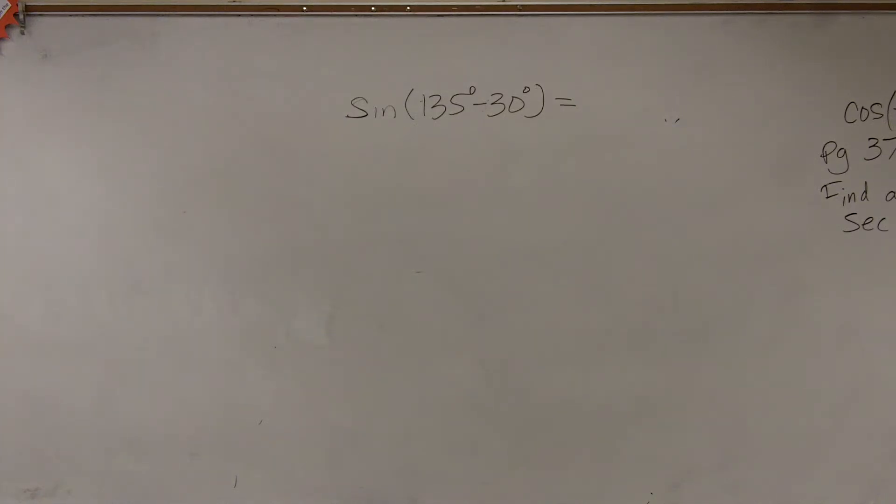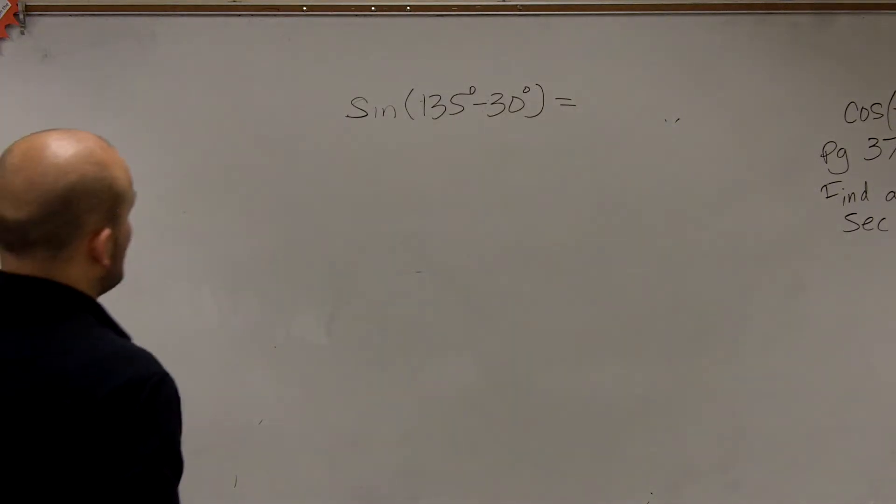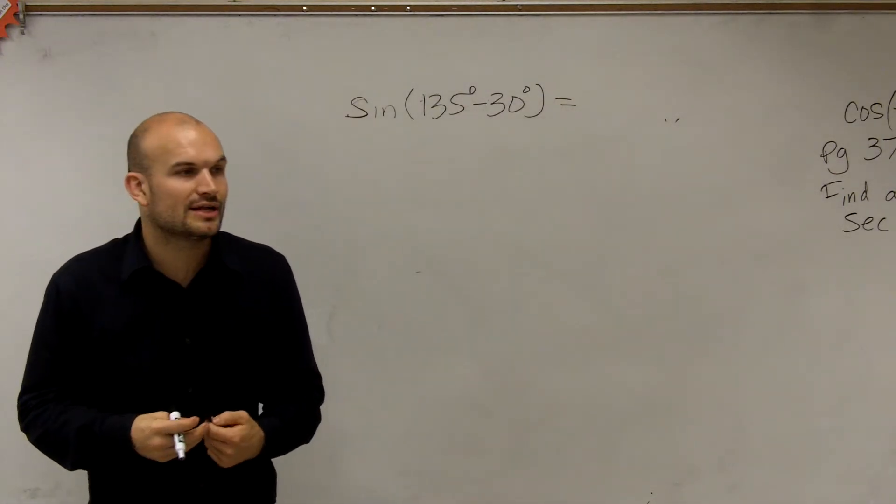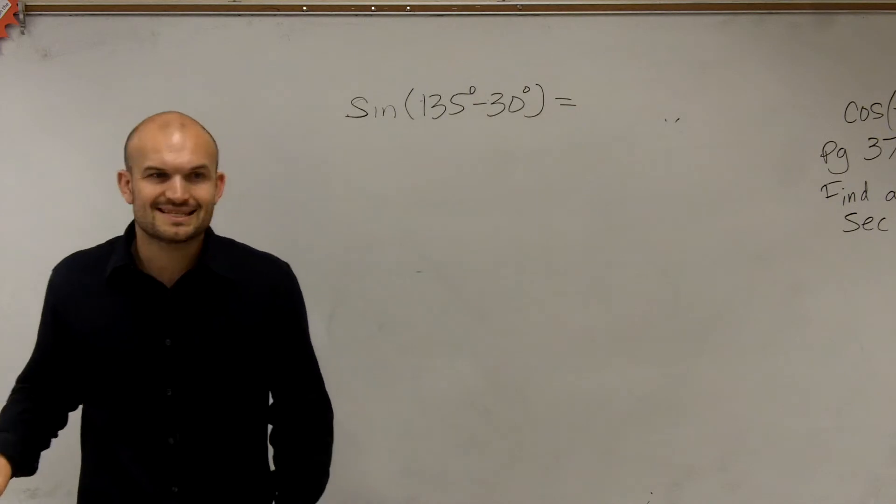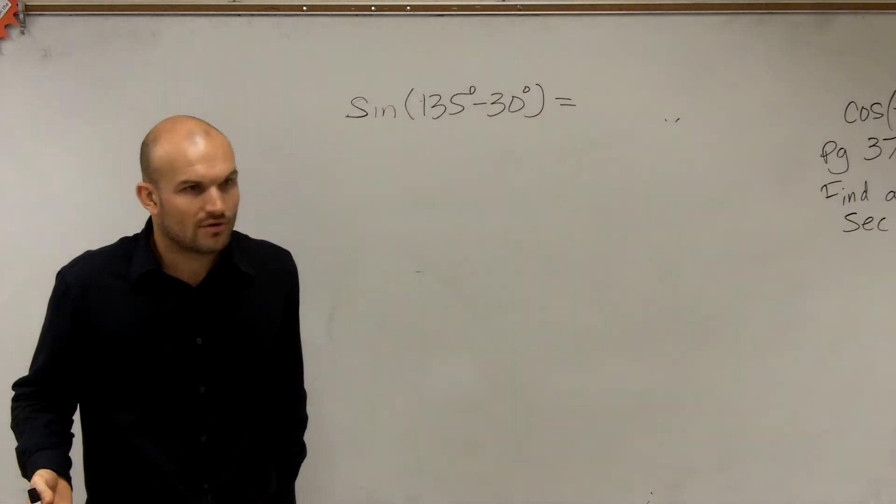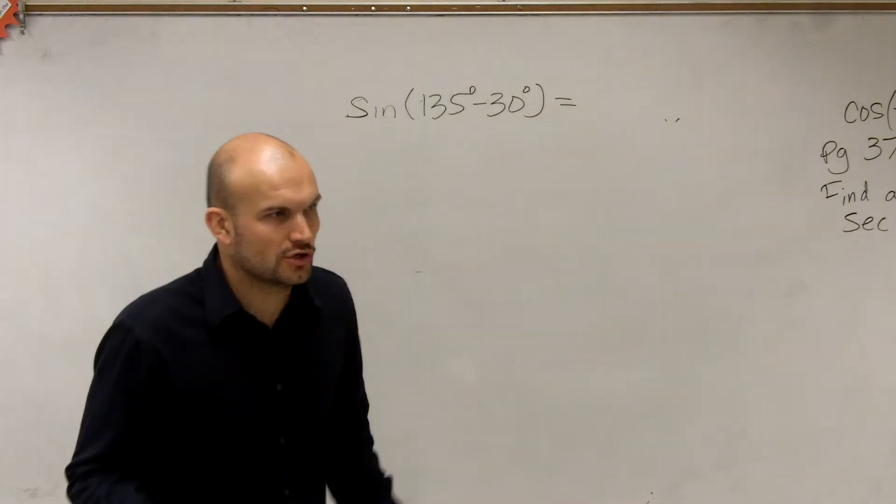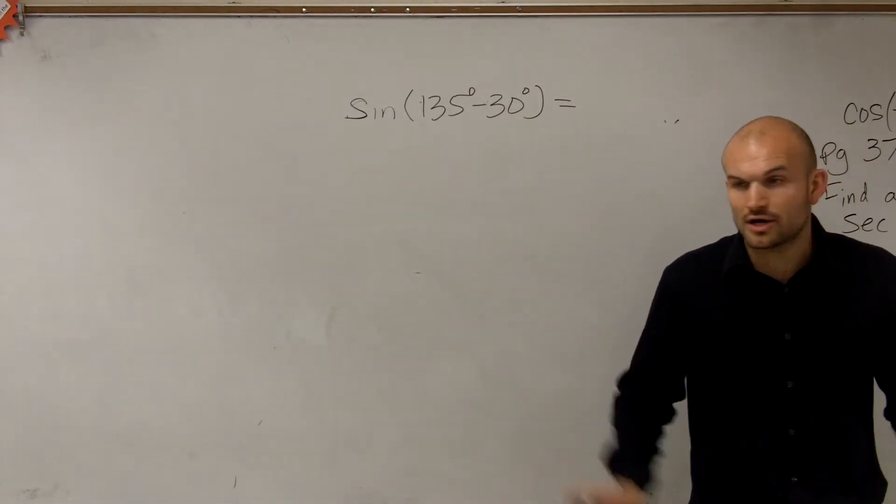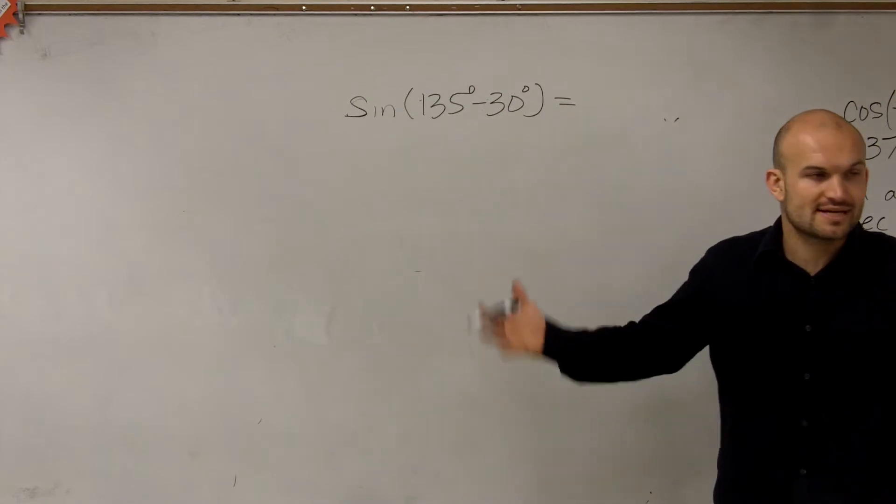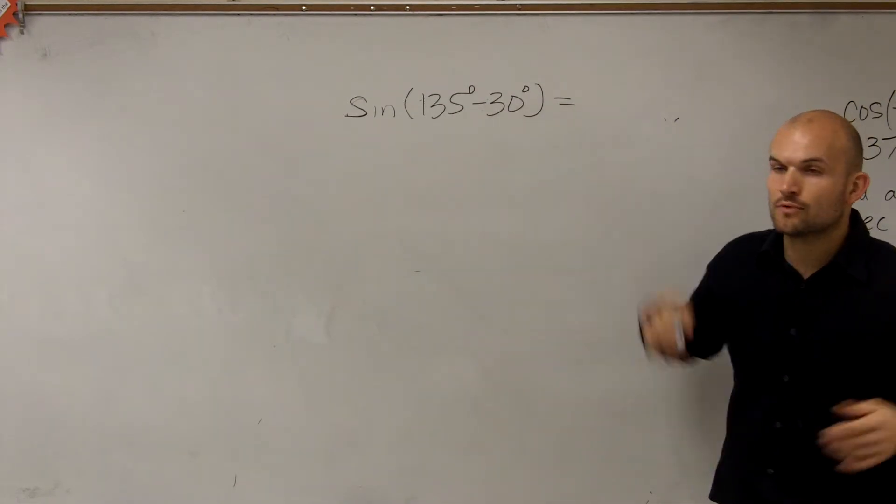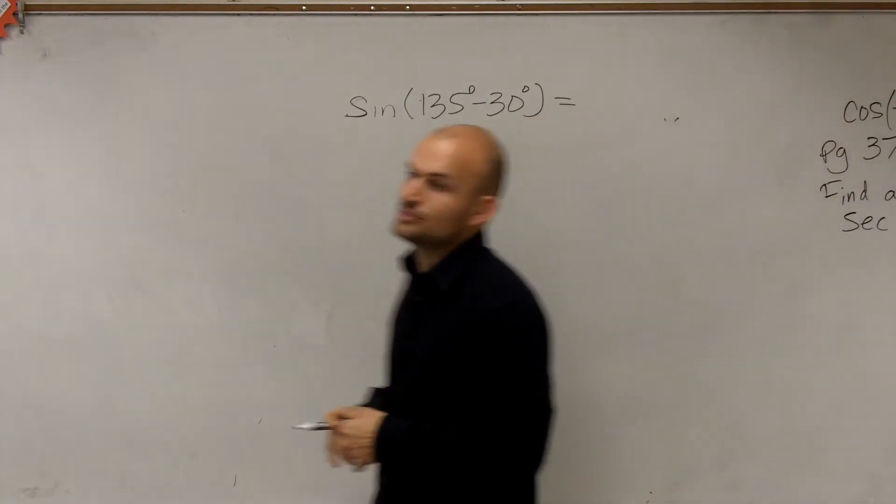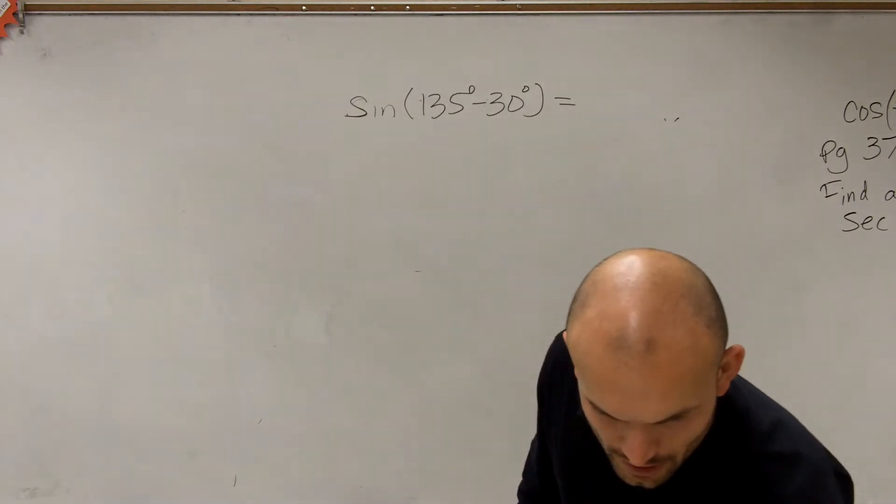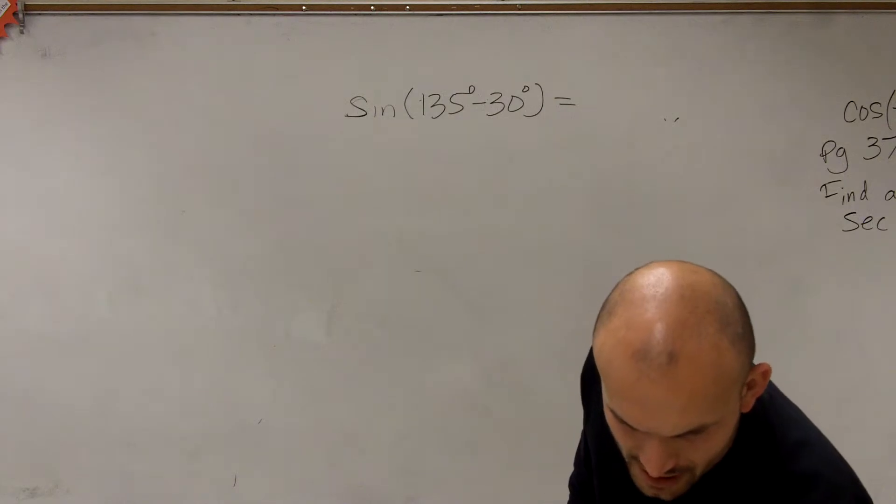All right. So for this problem, we have the sine of 135 degrees minus 30 degrees, which in reality is what I'm trying to help you figure out: the sine of 105 degrees. When you look at your unit circle for 105 degrees, we don't have a coordinate point that we can easily evaluate. So what I did is I took 105 degrees and rewrote it as 135 minus 30. Now we need to evaluate for the sine of this difference.